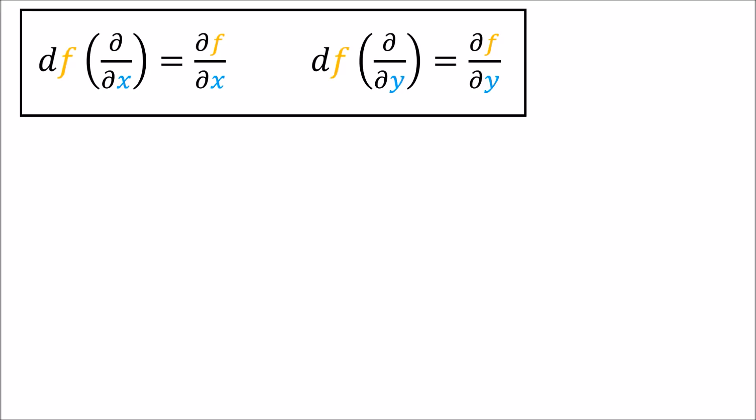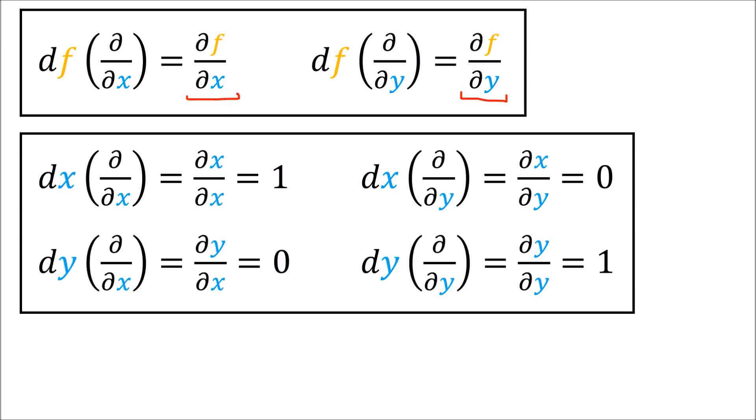To sum up: the covector field df acting on the basis vectors gives us the partial derivatives. When the dx and dy covector fields act on the basis vectors, we get either one or zero — one when the top and bottom variables are the same, and zero when they are different.